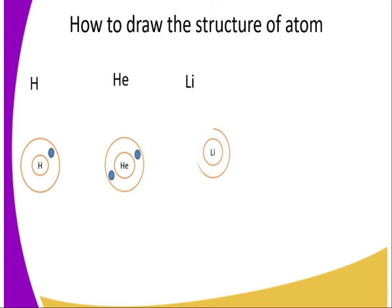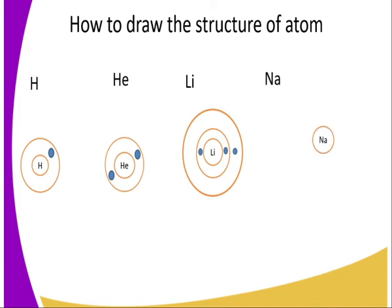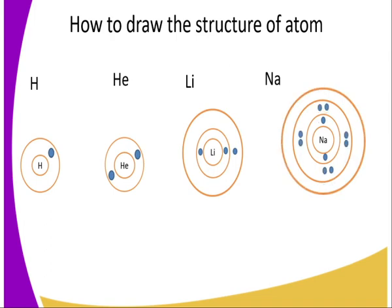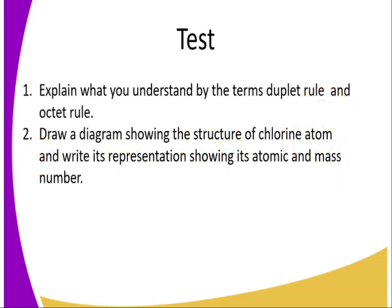For lithium, atomic number 3, we write the symbol at the nucleus. The first energy level holds a maximum of two electrons by the duplet rule, but lithium has three electrons, so the third electron must go into energy level two. For sodium, atomic number 11, the first energy level has two electrons, the second has eight, and the outermost energy level has one electron.